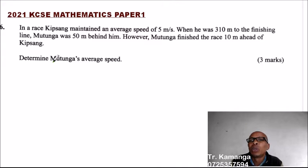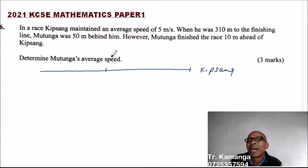Determine Mutunga's average speed. Now, we can use this demonstration. Let's say this is Kipsang. That is Kipsang. So, this is where we have the mark of 310 meters.